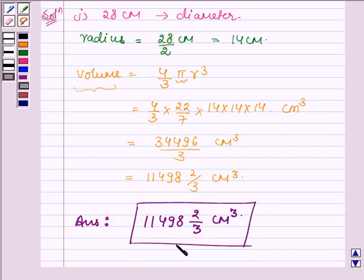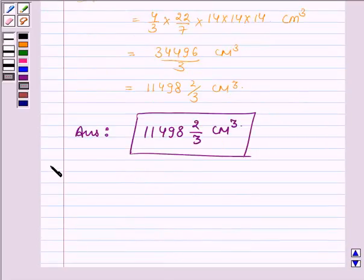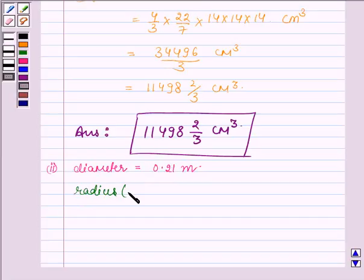So this completes the first part and now proceeding on to the second part. Here the diameter is equal to 0.21 meters. So this implies its radius is equal to 0.21 upon 2 meters, that is 21 upon 200 meters.